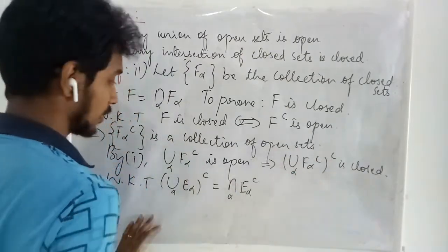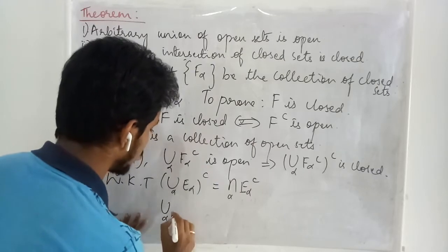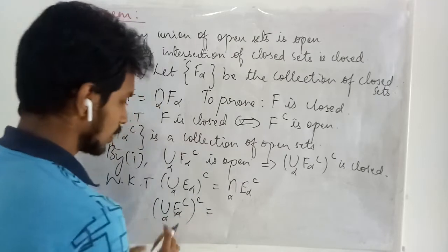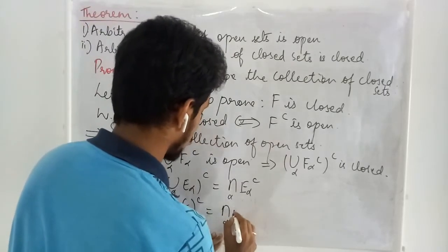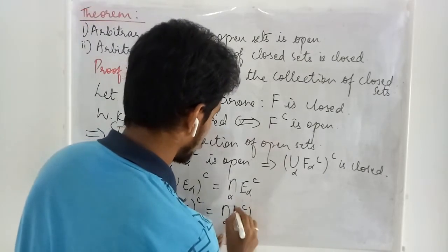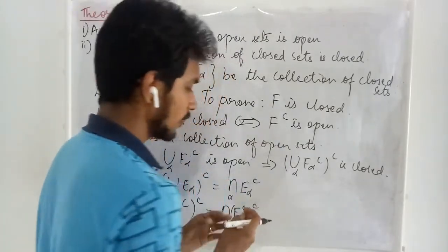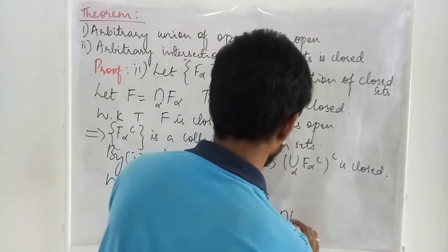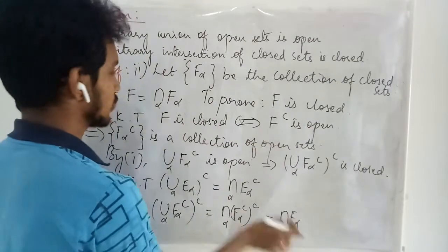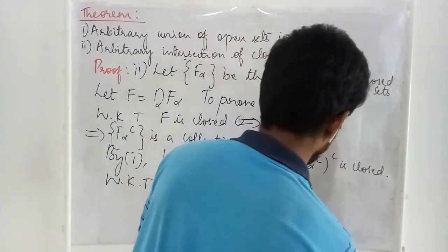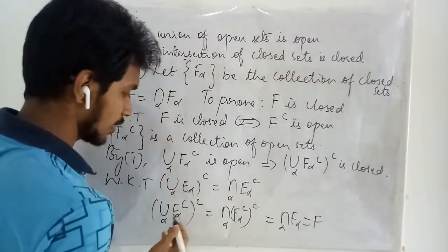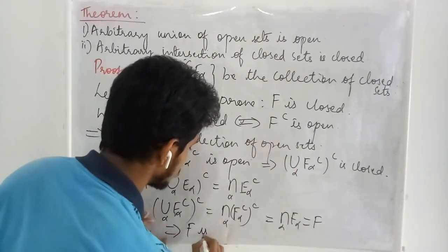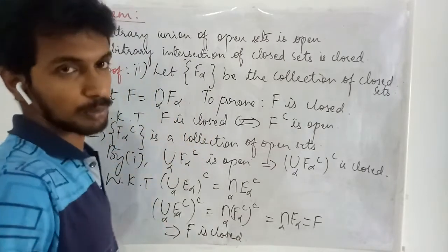Applying De Morgan's law with E_alpha replaced by F_alpha-complement: the complement of the union of F_alpha-complement equals the intersection of F_alpha-complement-complement. Taking the complement of a complement of a set gives back the original set, so this becomes the intersection of F_alpha over all alpha, which is exactly F. We have proved this set is closed and it equals F, which proves that F is closed.